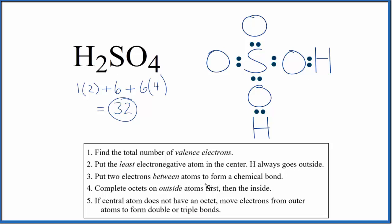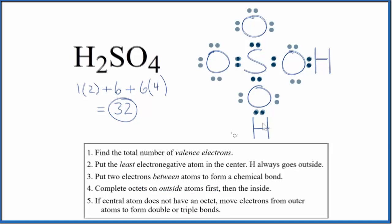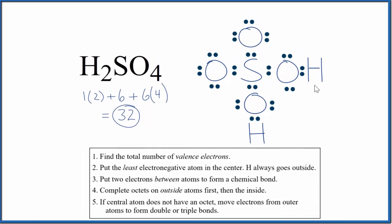At this point, we'll complete the octets on the outside atoms. So each hydrogen has two of these valence electrons. That's all it needs for a full highest energy level. The oxygens, each one of those has eight, and the sulfur in the middle, it has eight. And we've used all 32 valence electrons. So this looks like a pretty good Lewis structure for H2SO4, sulfuric acid.